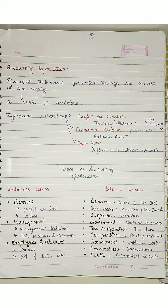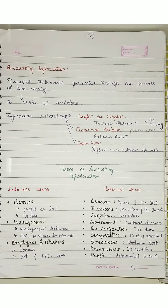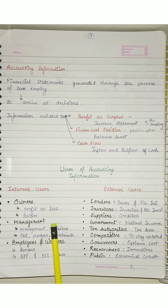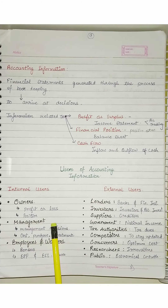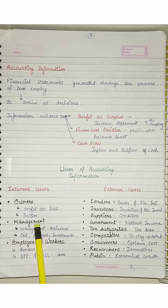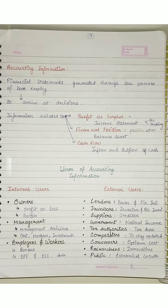In any entity — owners, of course, have made the investment, given their capital. So they have the most risk. So they should have information first about what is happening in their company or entity — their profit and loss, and about their financial position.